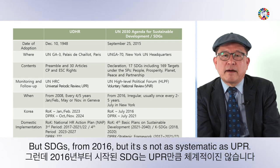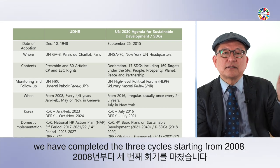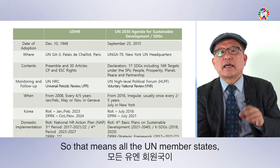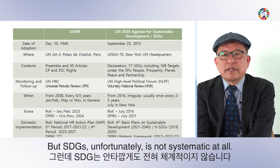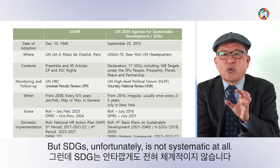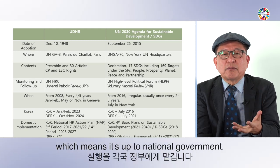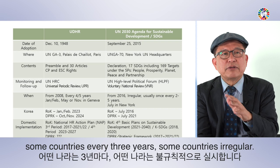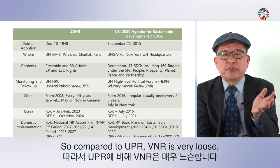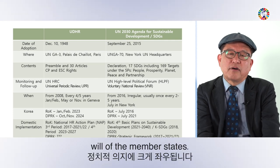The UPR meets three times a year, with each country reviewed once every four or five years. All UN members come to Geneva to present their commitment to human rights. We've already completed three UPR cycles since 2008. By contrast, the VNR is very loose and voluntary — not systematic at all. Some countries submit every two years, some every three, some irregularly. Compared to UPR, VNR is very dependent on the voluntary political will of member states.